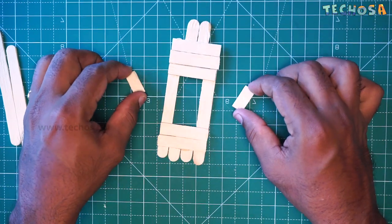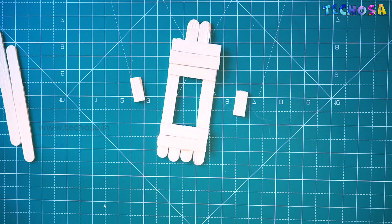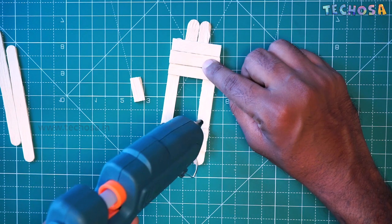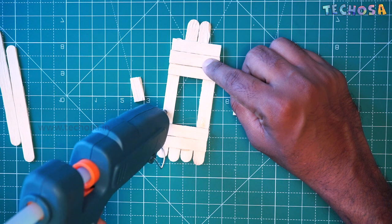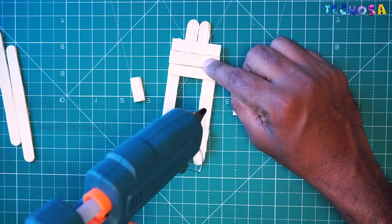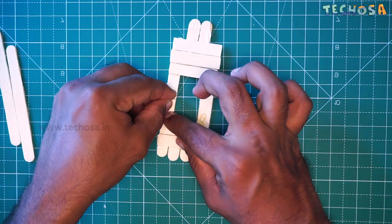Next we need two small pieces of sticks like this that has to be fixed to the sides of the form. So fix those two small pieces of stick like this way.